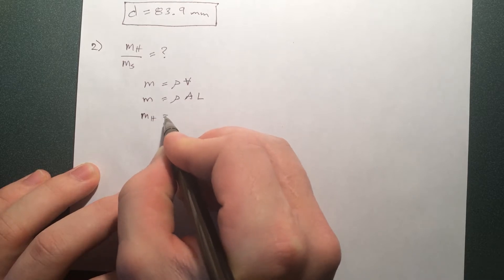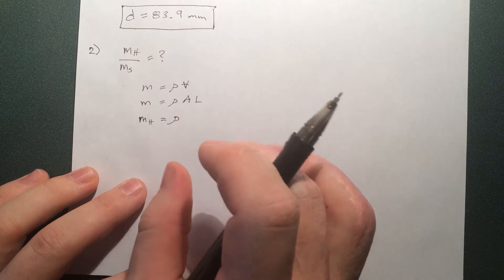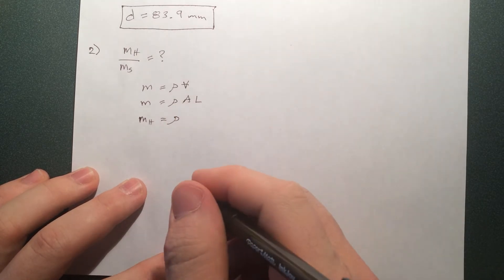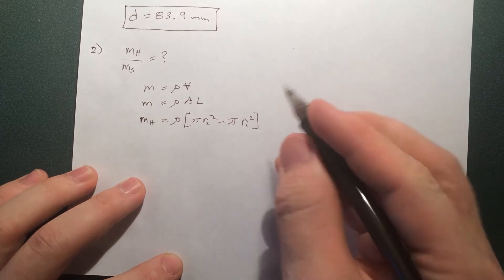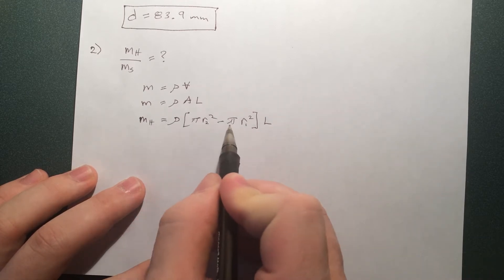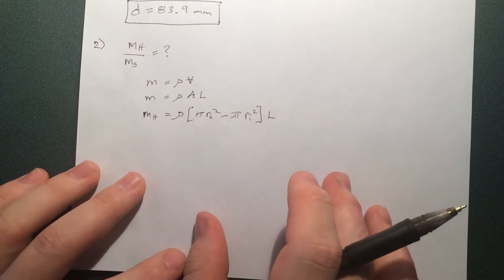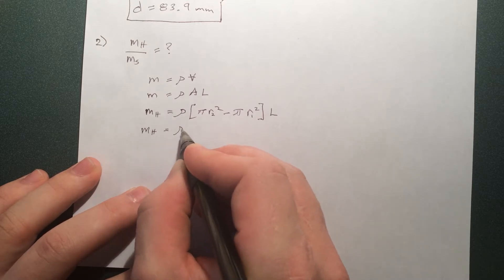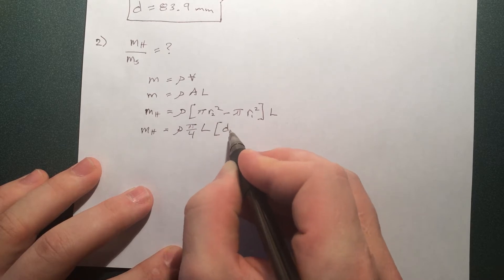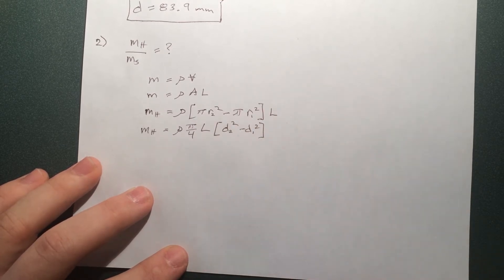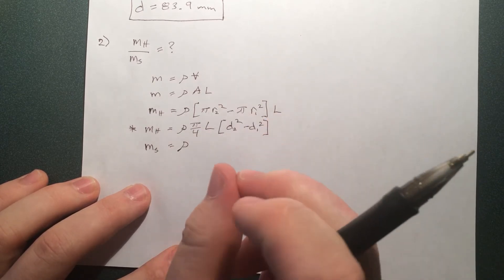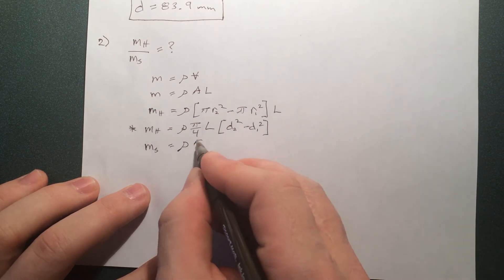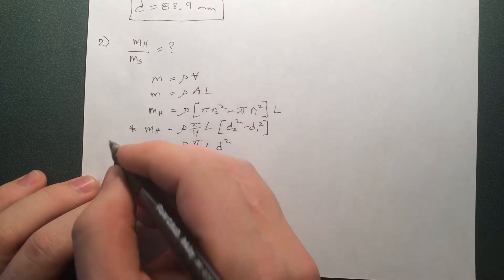For the hollow bar, the cross-sectional area is π·r2² minus π·r1², multiplied by length. Factoring out pi and replacing radii with diameters, the mass of the hollow bar is m_H = ρ · (π/4) · L · (D2² − D1²). For the solid bar, it's just one diameter, so m_S = ρ · (π/4) · L · D².